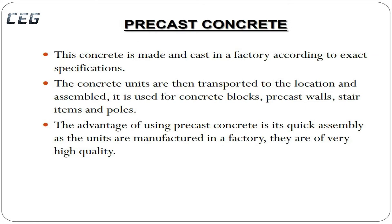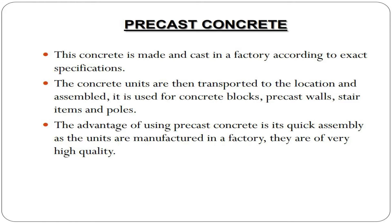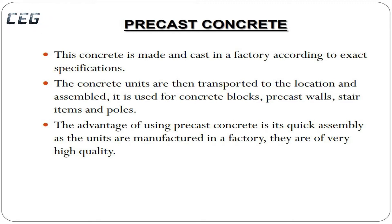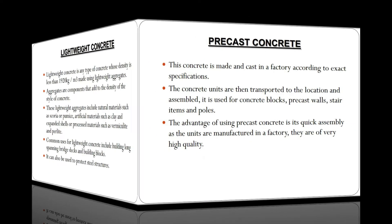Pre-cast concrete is made and cast in a factory according to exact specifications. The concrete units are then transported to the location and assembled. It is used for concrete blocks, pre-cast walls, stair units, and poles. The advantage of using pre-cast concrete is its quick assembly, and as the units are manufactured in a factory, they are of very high quality.